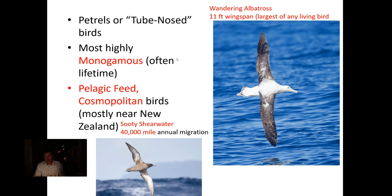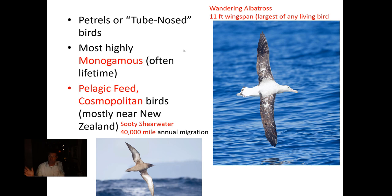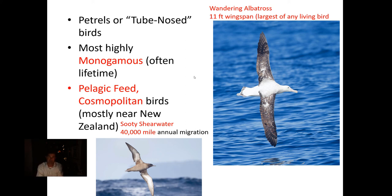Another group of ocean birds are called petrels, also called tube-nosed birds. Those include things like the sooty shearwater, which migrates 40,000 miles in its annual migration — the longest migration of any known animal. Another would be the wandering albatross, which has an 11-foot wingspan, the largest of any living bird. Nearly all of the petrels or tube-nosed birds are very highly monogamous — the male and female mate quite often for life. They are pelagic feeding, cosmopolitan birds that travel all over the entire ocean.